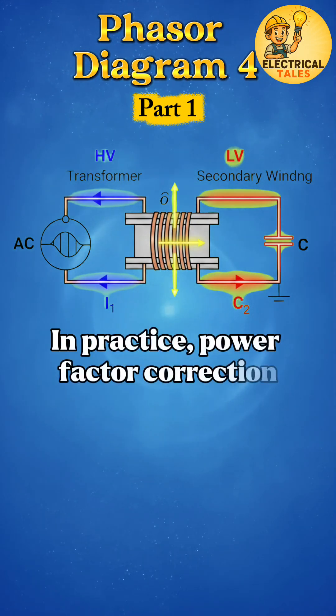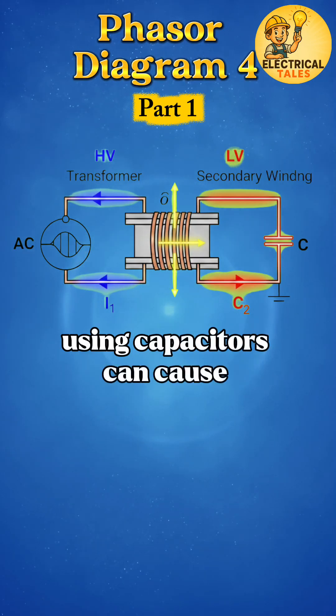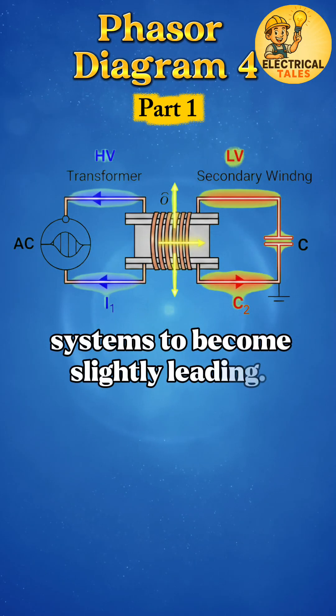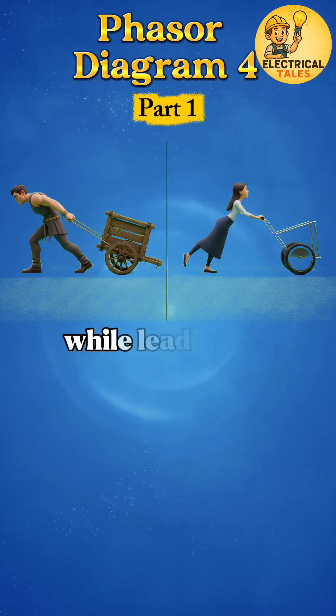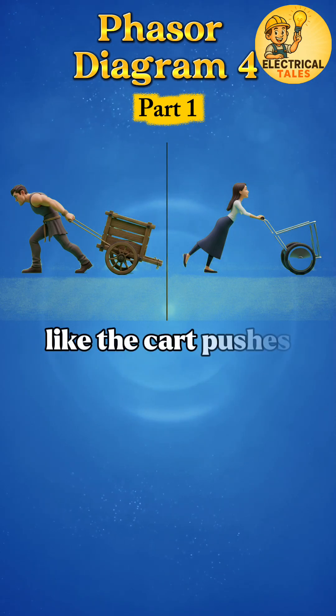In practice, power factor correction using capacitors can cause systems to become slightly leading. Picture lagging PF like pulling a cart behind, while leading PF feels like the cart pushes you forward.